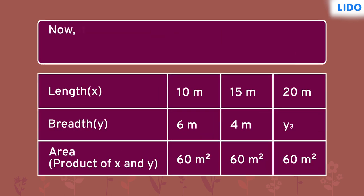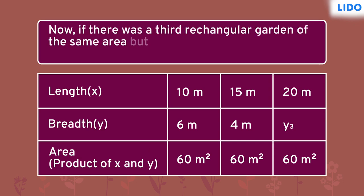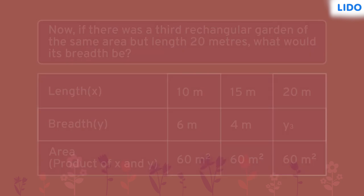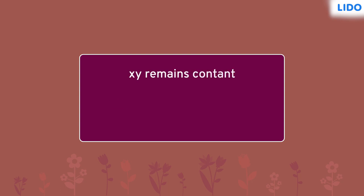Now, if there was a third rectangular garden of the same area but with a length of 20 meters, what would its breadth be? We know that x times y remains constant, so 20 times y has to be equal to 60. Thus, y is equal to 3 meters — so the breadth of the third garden would be 3 meters.